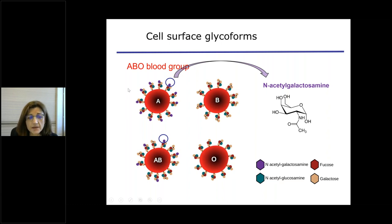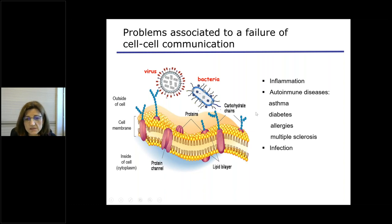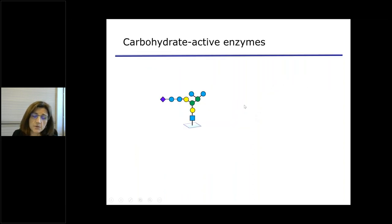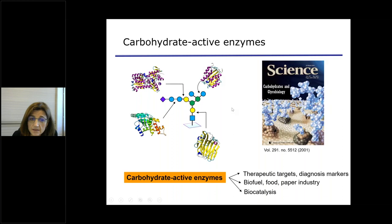When these glycoforms on the surface of our cells are not assembled properly — because maybe one sugar unit is missing or there is too much of it — many diseases can occur, like inflammation, autoimmune diseases, allergies, and infection. Often responsible is one of the many enzymes that catalyze the cleavage or formation of glycosidic bonds. This has brought a lot of attention to carbohydrate active enzymes, which are important therapeutic targets and have applications in diagnostics and industry.